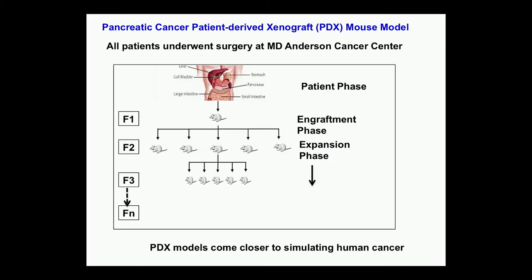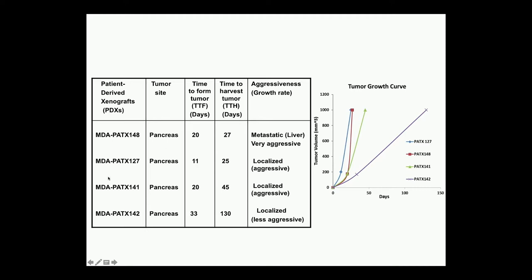We used multiple patient-derived tumors of different levels of aggressiveness, well-established in patients. We took four pancreatic cancer patients, and the tumors were engrafted in four mice, selected because they have a very well-differentiated aggressiveness profile. One — PTX148 — is super aggressive; the mice essentially die in a month, and that patient died within a month as well. Pancreatic cancer is one of the most aggressive cancers you can get. Another patient, 142, is relatively less aggressive — in that case the mice survive almost 130 days. We also observe the tumor growth curve.